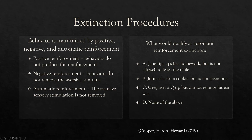For example, what qualifies as automatic reinforcement extinction? Automatic reinforcement simply means alone or a sensory feeling. Example A: Jane rips up her homework but is not allowed to leave the table — this is socially mediated, maintained by negative reinforcement, not automatic. Example B: John asked for a cookie but is not given one — that's withholding positive reinforcement. Example C: Greg uses a Q-tip but cannot remove the earwax — this is automatic extinction, because the aversive sensory stimulation is not removed. Identify the reinforcer maintaining the behavior, then cease to deliver that reinforcer.